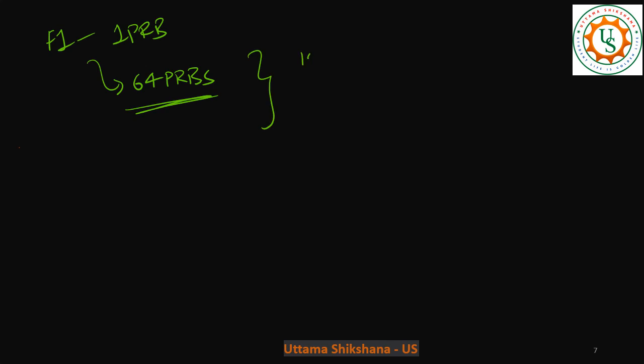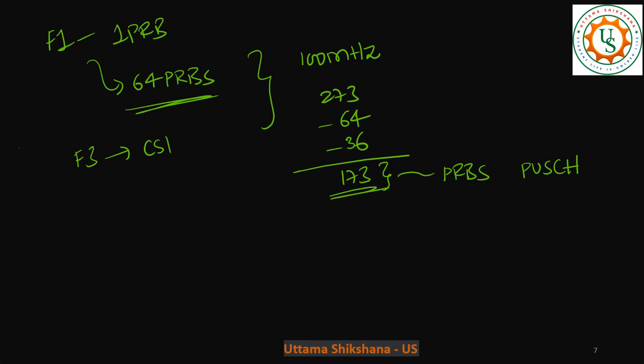Let's take 100 MHz and in that we have 273 PRBs, out of which 64 is already gone. And maybe there could be some F3 format for which other UEs want to send CSI information, maybe a few more. Let's say another 36 PRBs are gone, in which case total 100 are gone, then let's say just 173. Just 173 PRBs are now available for scheduling PUSCH data.